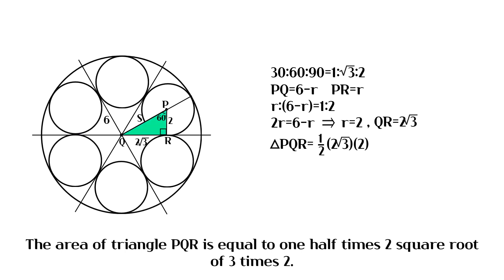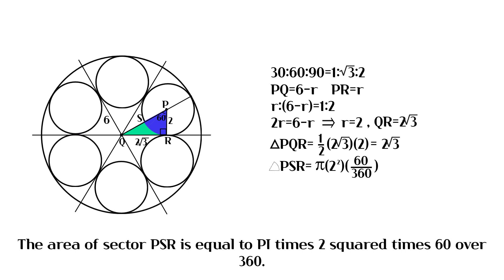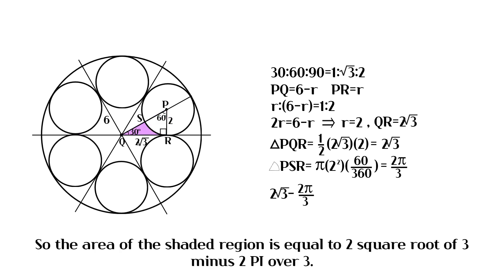The area of triangle PQR is equal to 1 half times 2 square root of 3 times 2. The area of sector PSR is equal to pi times 2 squared times 60 over 360. So the area of the shaded region is equal to 2 square root of 3 minus 2 pi over 3.